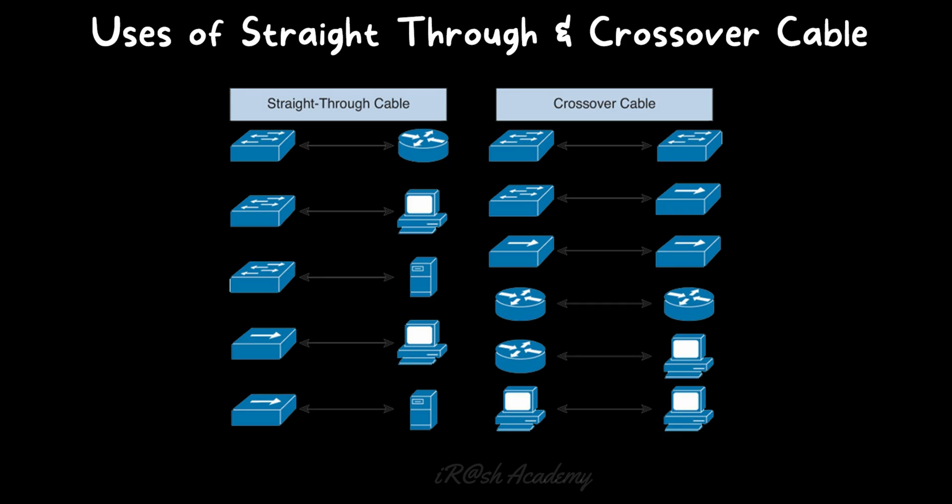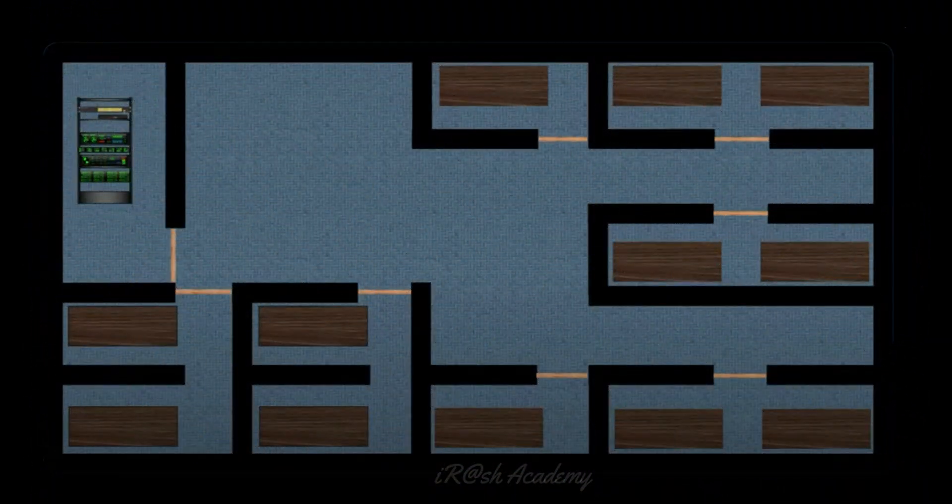This is the past. Nowadays, most network devices are intelligent enough to understand which device is connected at the other end and can negotiate the connectivity automatically. That means for new networking devices we don't need to use crossover cables anymore — we can connect a straight-through cable and the device is intelligent enough to identify the other device and make the connection.